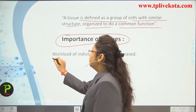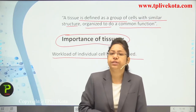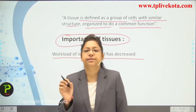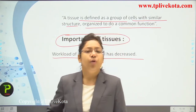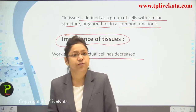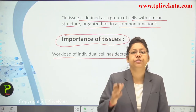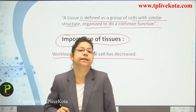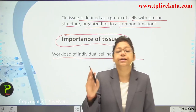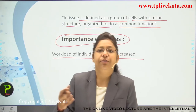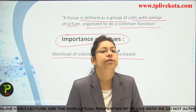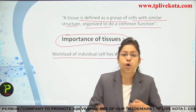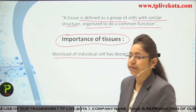The importance of tissues: first, the workload of individual cells is decreased. In a unicellular organism, one cell does everything. In multicellular organisms, cells are organized into tissues specialized for specific functions — lung tissues perform respiration, alimentary canal tissues perform digestion, RBCs perform transportation. Blood is a tissue performing transportation of minerals and nutrients throughout the body.